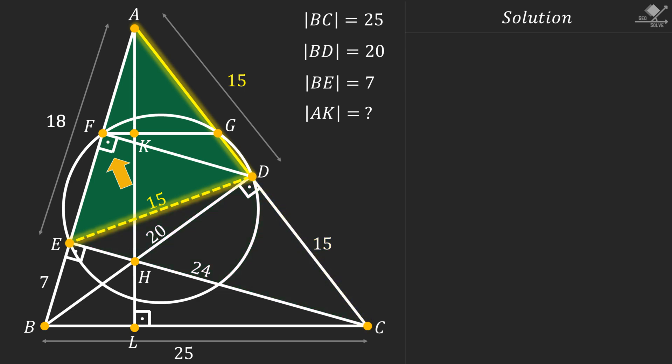Now focus on this isosceles triangle. Notice that line segment FD is the height of the isosceles triangle drawn from the apex angle. So it must divide the 18 units bottom line segment into two equal 9 unit parts.